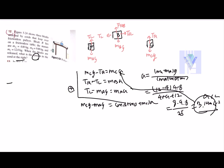You would have TR equals MCG minus MCA, that is MC times G minus A. MC is 12 kilograms, and G is 9.8 minus 3.14. And if you calculate this, you would have 79.92 newtons as your answer.